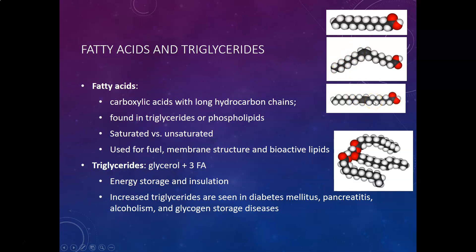Trans fats are man-made — they're not found in nature. There is a double bond, so technically it's an unsaturated fatty acid, but the way the double bond is oriented doesn't produce a big kink in the chain. It's because there's a hydrogen on each side of the double bond — it's in the trans configuration versus the cis configuration — which makes the carbon chain almost straight, allowing it to be more solid at room temperature, similar to saturated fats. Trans fats are not good for your health and should be avoided. They're found in things like Crisco and anything with hydrogenated oils.